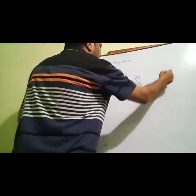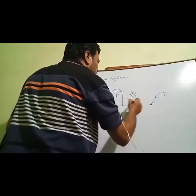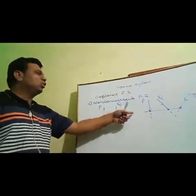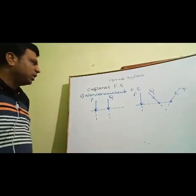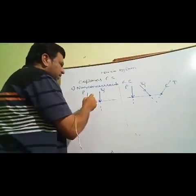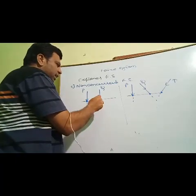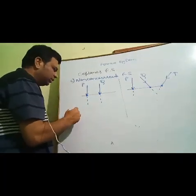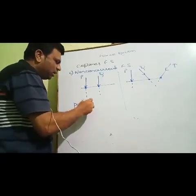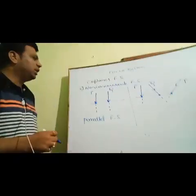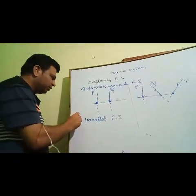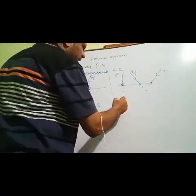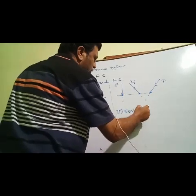Forces P, Q, and T acting at three different points with three different lines of action form a non-concurrent force system. If those lines of action are parallel to each other, they form a parallel force system. So non-concurrent force system is further classified into two categories: parallel force system and non-parallel force system.